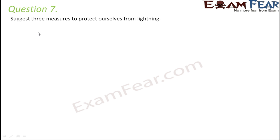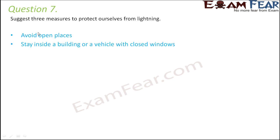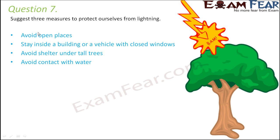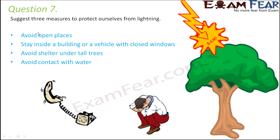Question number 7 covers safety measures during lightning. Avoid open places as they are more prone to lightning strikes. Stay inside a building or vehicle with closed windows, as most buildings have lightning conductors. Avoid shelter under tall trees — tall trees have positive charges accumulated on top, making them prone to electrical discharge with the negatively charged bottom of the cloud. Avoid contact with water since water is a good conductor of electricity and increases the chances of electric shock.